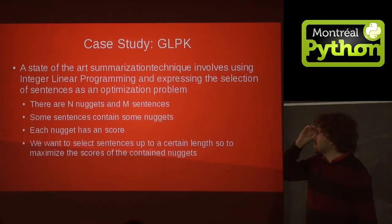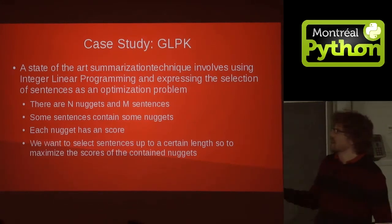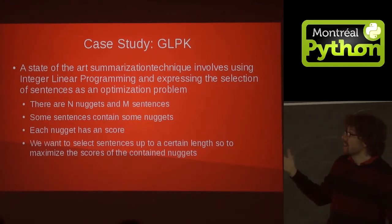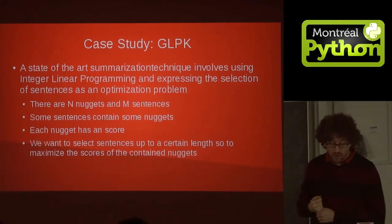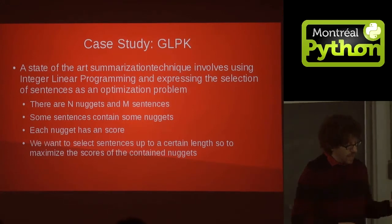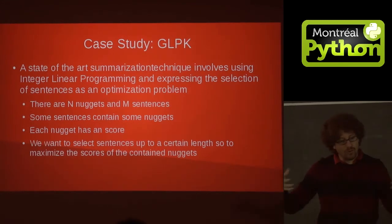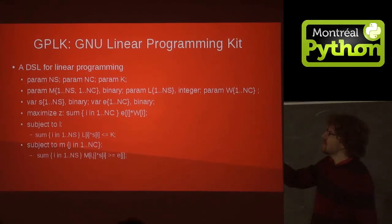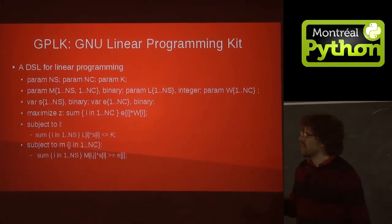The case study I wanted to share with you today is a library called GLPK. It has a state-of-the-art summarization technique that uses integer linear programming and expresses the selection of sentences for a summary as an optimization problem. If we have n nuggets and m sentences, with some sentences containing certain nuggets, and we have a score for each nugget, we want to select sentences up to a certain length to maximize the scores of the contained nuggets. There is a very nice library called GNU Linear Programming Toolkit, GLPK, and it has a small domain-specific language for linear programming.